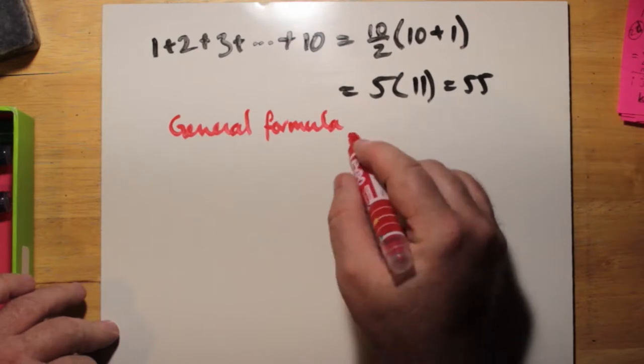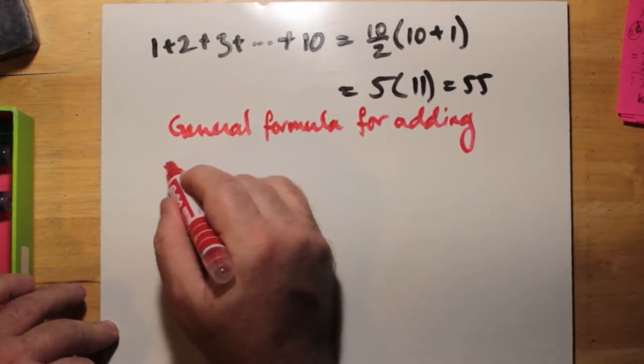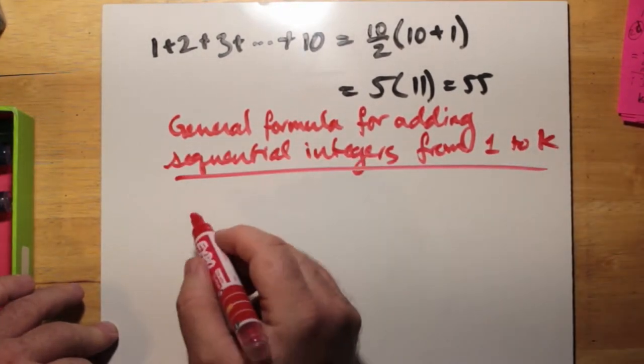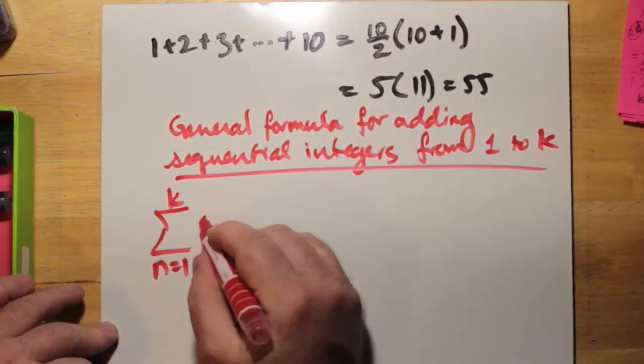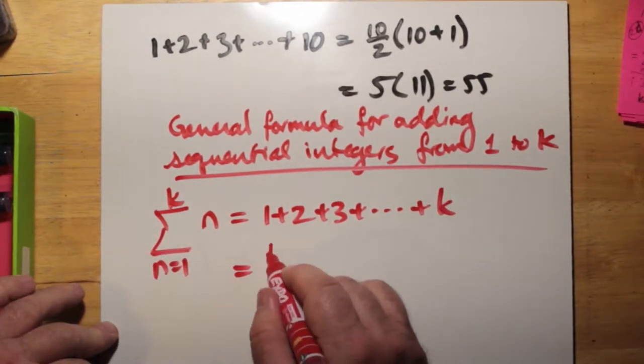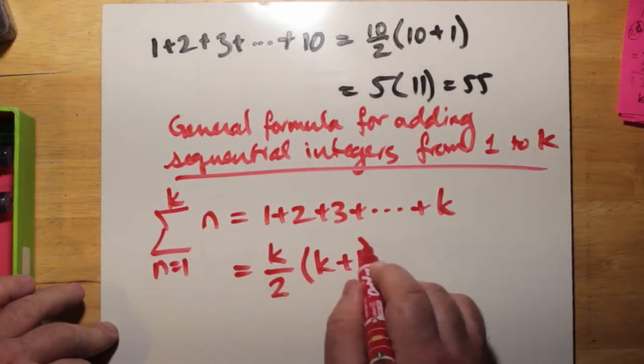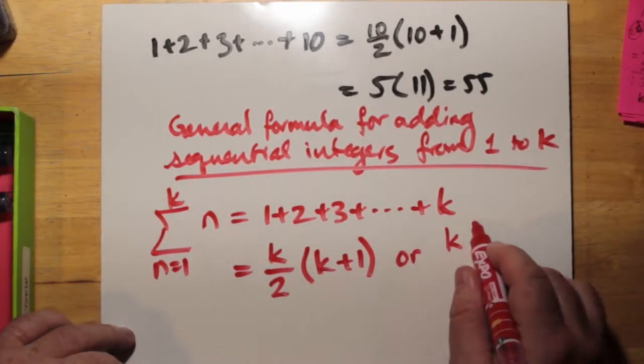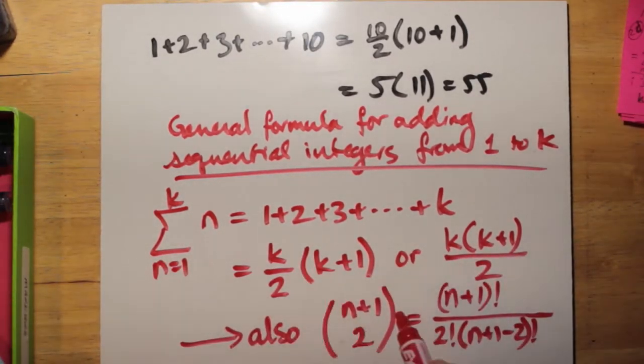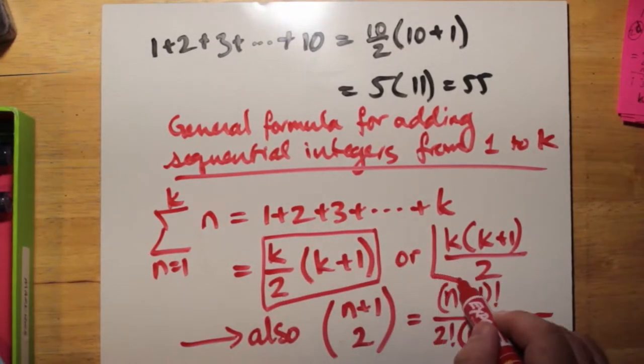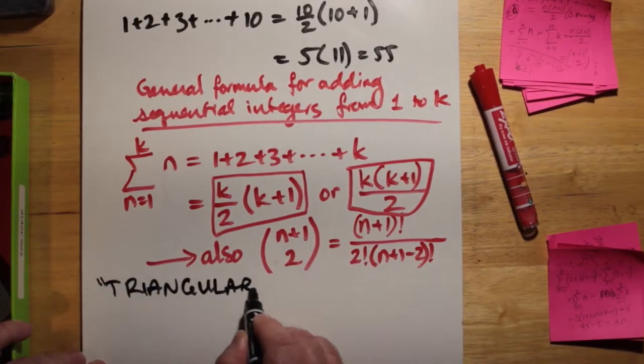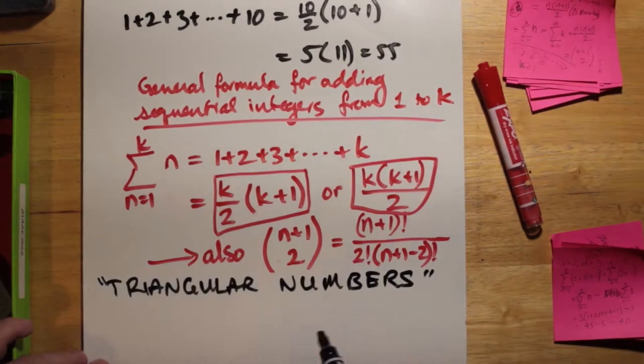So this leads us to the general formula for adding any sequential integers from 1 to some k value. This becomes k over 2 multiplied by k plus 1. Now that 1 can be replaced by any value of whatever the first term is. So the 1 just happens to be the first term. And I'm just going to put these in squares. There's a couple more advanced formulas down there, but I used n instead of k, but they should have been k. The numbers that I'm talking about here, adding from 1 up to some finite number k, are known as the triangular numbers.